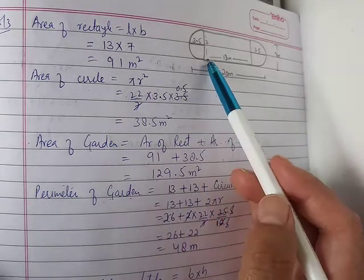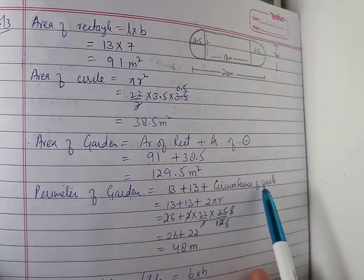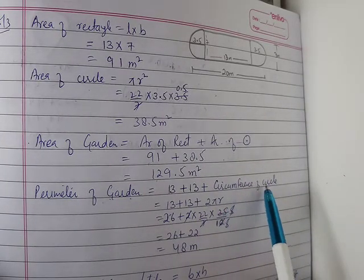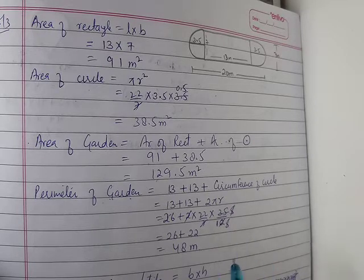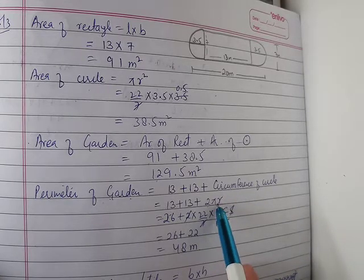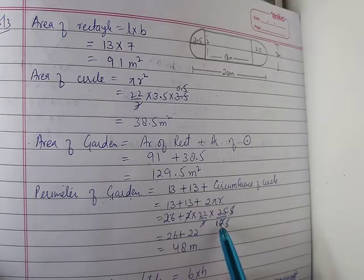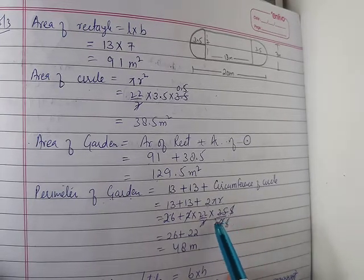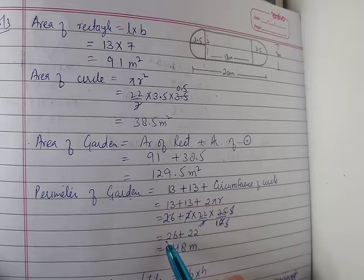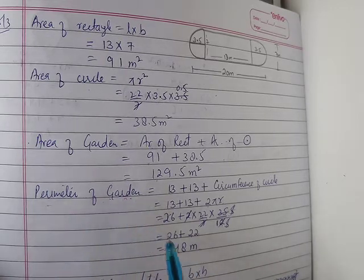Next is the perimeter. For the perimeter of the garden, we have 30 plus 30. Then we need the circumference of the circle - it's a semicircle. The formula is 2πr. π value is 22/7, radius is 3.5. Calculating this gives us 22. Then 26 plus 22 equals 48 meters. That's the perimeter of the garden.